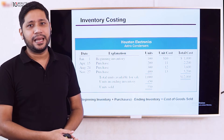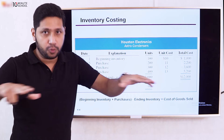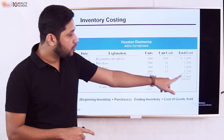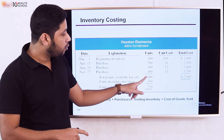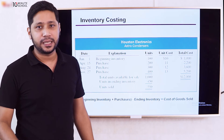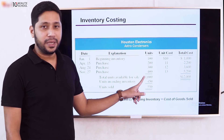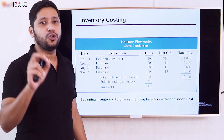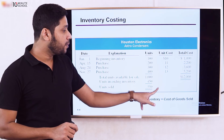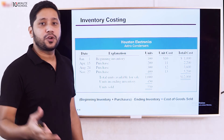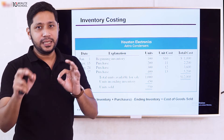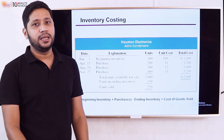Now for the weighted average method. Weighted average means we calculate an average cost. We take the total cost and divide by total units — 1,000 divided by 1,000 — to get the average cost per unit. This average cost is then used to calculate both cost of goods sold and ending inventory.